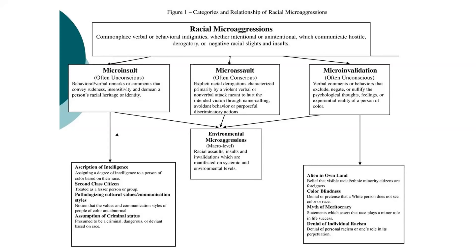For microinsults, these are behavioral verbal remarks. Microassaults are explicit racial derogations. Microinvalidations are verbal comments or behaviors that exclude, negate, or nullify the psychological thoughts, feelings, or reality of a person of color. Initially Derald Wing Sue conceived of this as racial microaggressions, but we're starting to see these replicated based on gender and other cultural identifiers — sexual orientation, race, ethnicity, age — so our understanding of microaggressions has grown quite significantly.